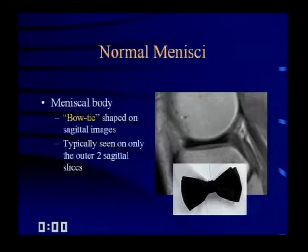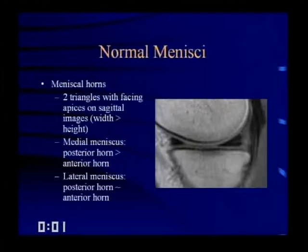Meniscal horns appear as two triangles with facing apices on sagittal images. The width is generally greater than the height. For the medial meniscus, the posterior horn is larger than the anterior horn, and for the lateral meniscus, the horns are about equal size.